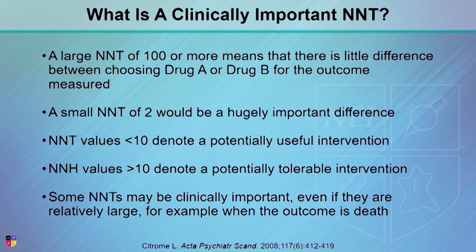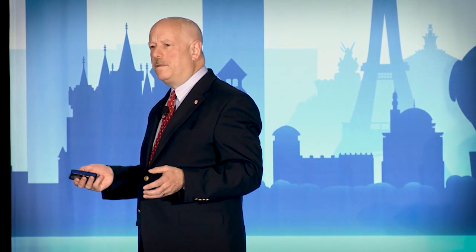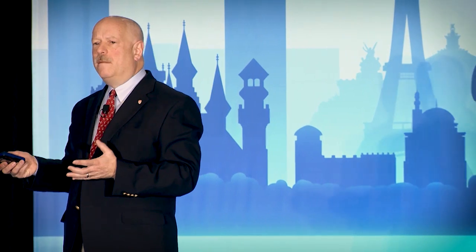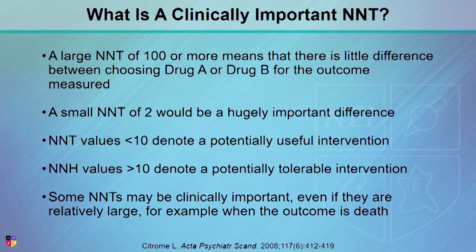A clinically important NNT is one that's a low number. A large NNT of 100 means you won't notice the difference — if it takes a hundred people to receive A versus B before you encounter that outcome, it doesn't happen at a frequency that is noticeable in day-to-day practice. However, an NNT of two means that for every two patients you make one decision versus the other, you encounter this difference in outcome. That's a huge difference. Very few drugs or interventions versus placebo have an NNT of two.